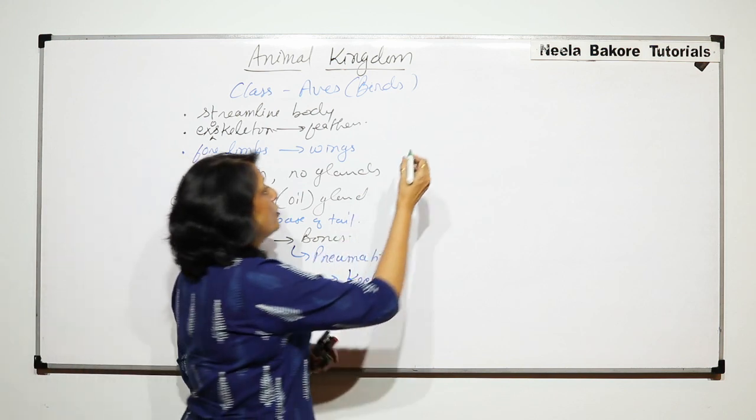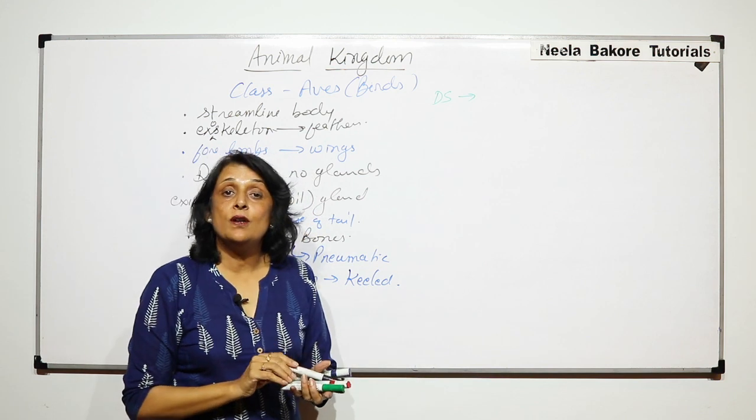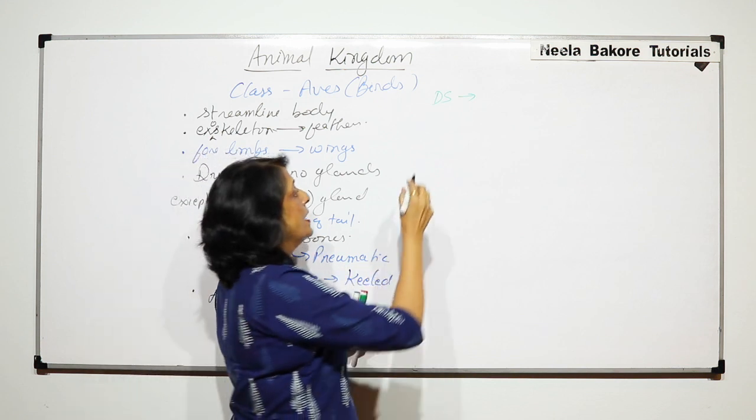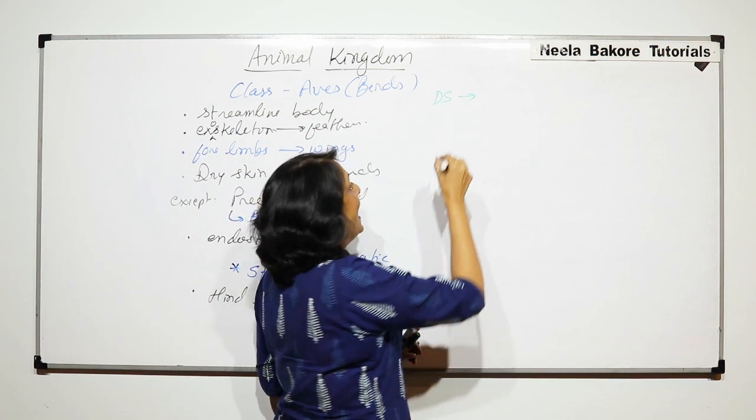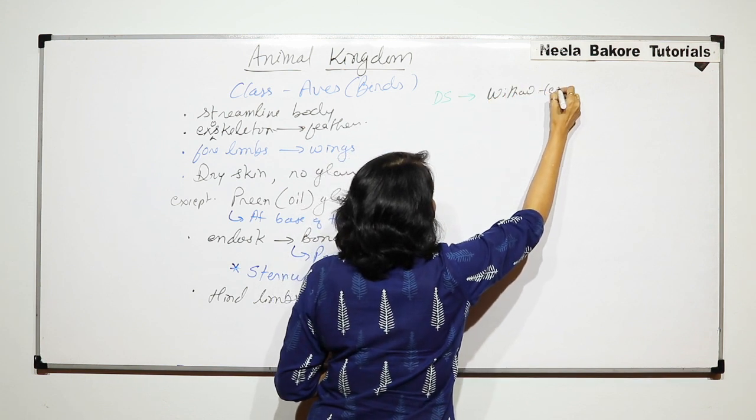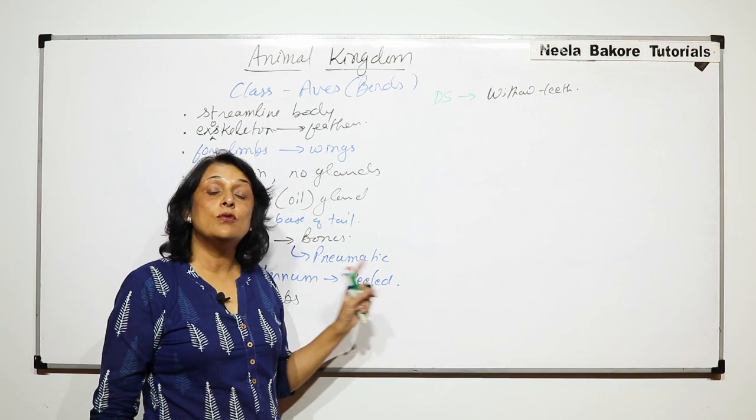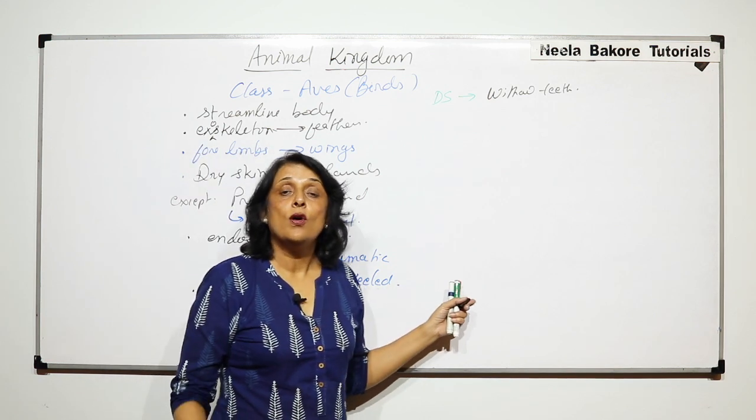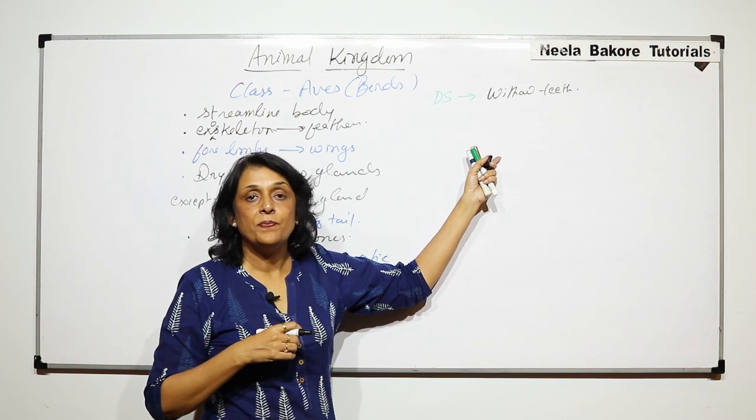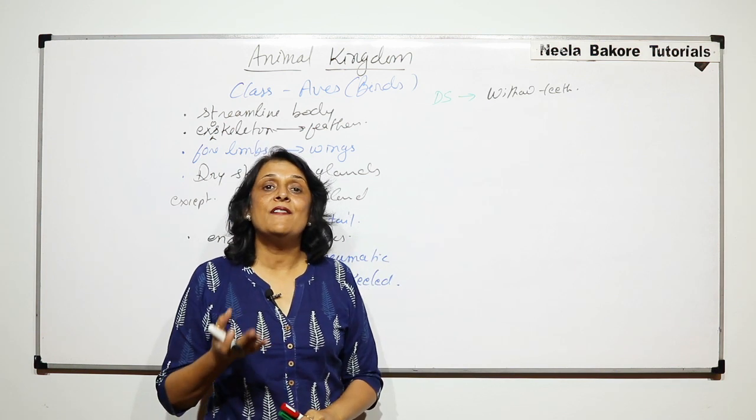Then if we talk about some systems, say digestive system. In case of birds digestive system is very well developed but there are certain modifications. They have beak and the beak is without teeth. There are no teeth. We say that the birds are edentulous. They do not have teeth. So what they do is they simply take the food and swallow. So loss of teeth is an adaptation so that the body weight is less.